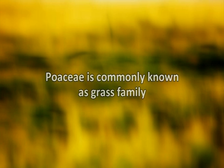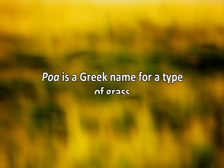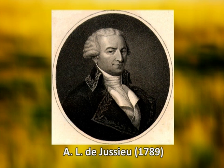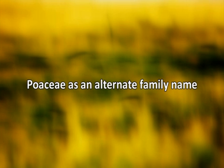First, the taxonomy. Poaceae is commonly known as the grass family. The term Poa is a Greek name for a type of grass. The family Poaceae was first established as a formal taxonomic category under the scientific name Gramineae by A.L. de Jussieu in 1789. Later, Poaceae as an alternate family name was necessitated due to the typification rule of the International Code of Botanical Nomenclature, while Gramineae was also conserved due to its wide usage. The family members of Poaceae are distinctive.